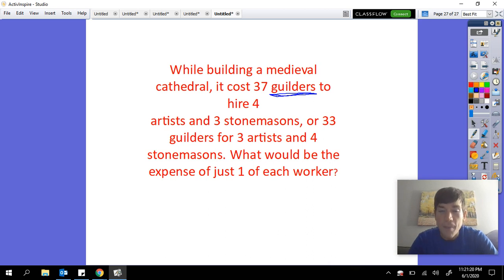It costs 37 guilders to hire four artists and three stonemasons, or it costs 33 guilders for three artists and four stonemasons. The question we're trying to figure out is what would be the expense of just one of each worker. Now to start off, I'm going to write down the information that we have.